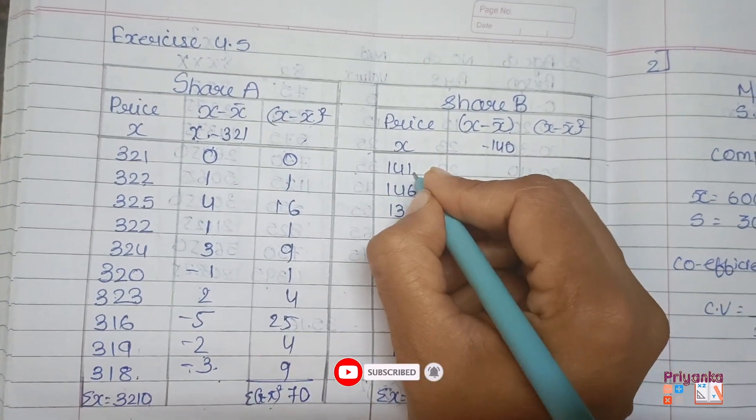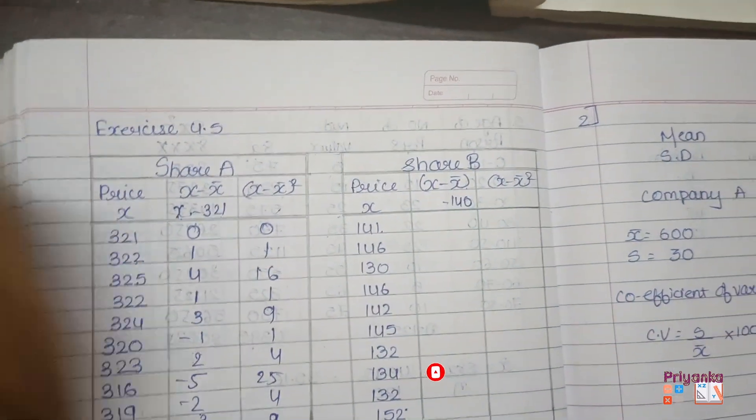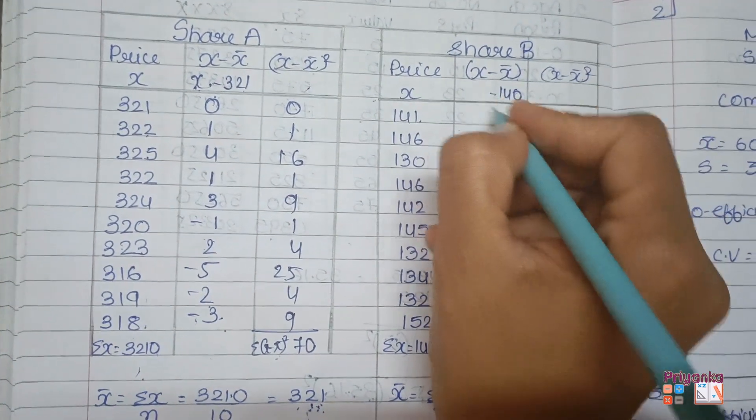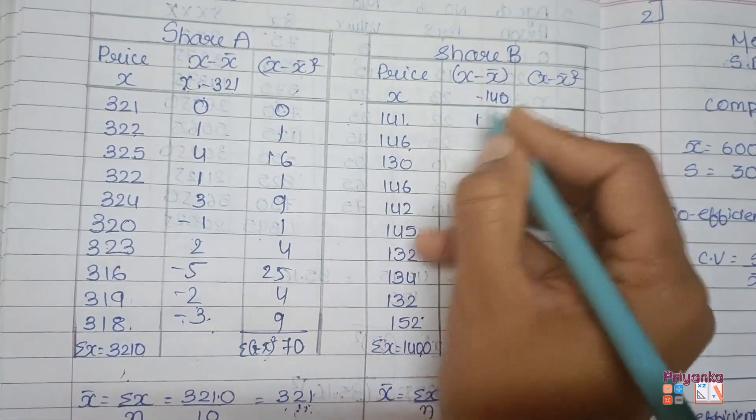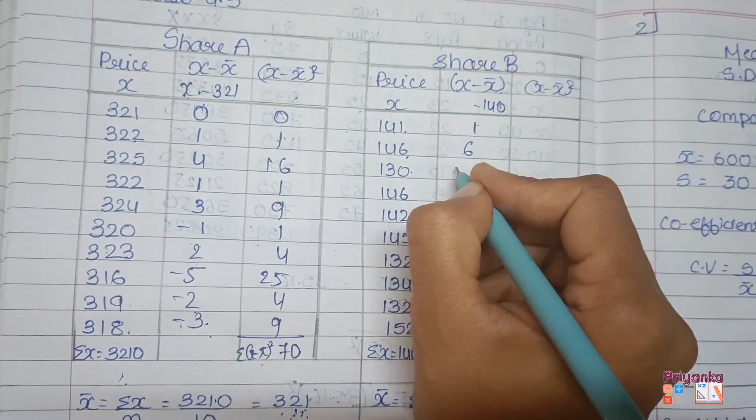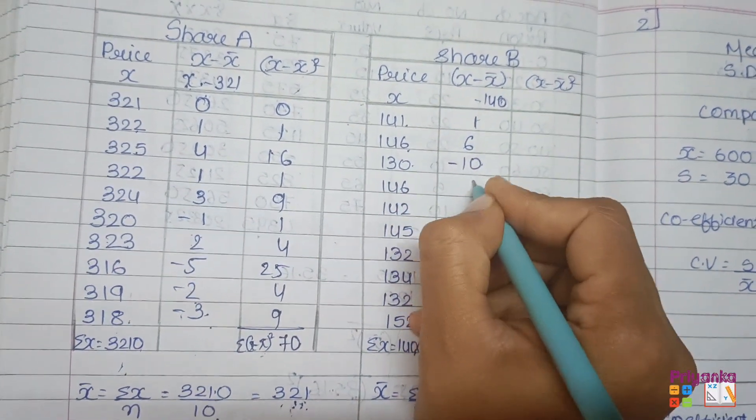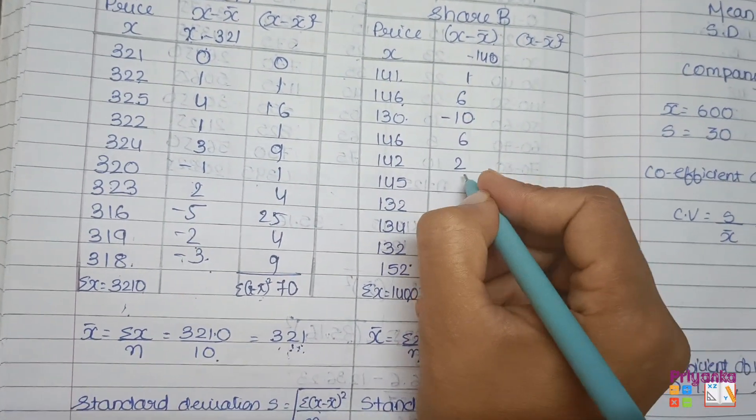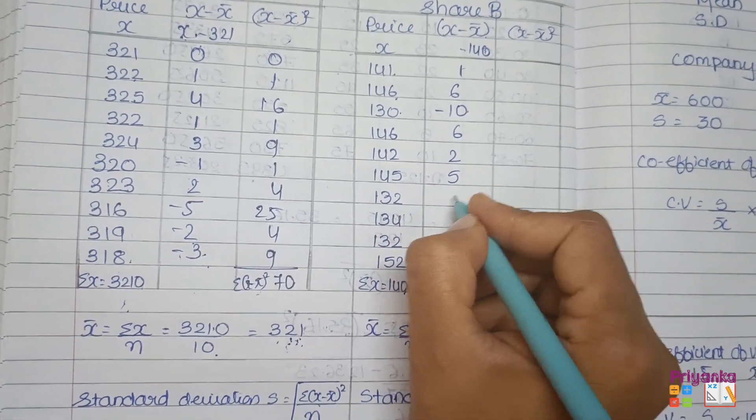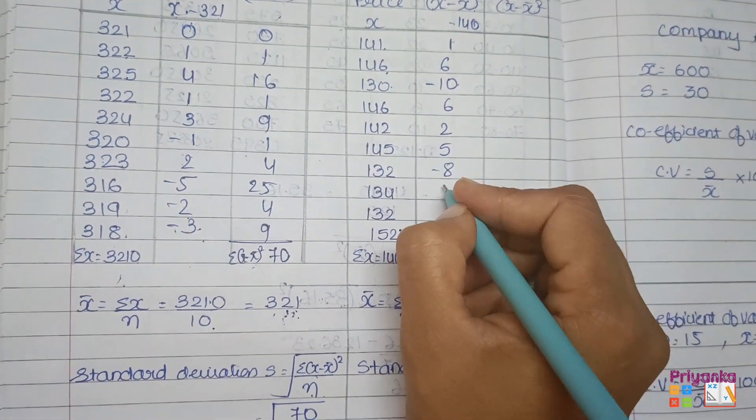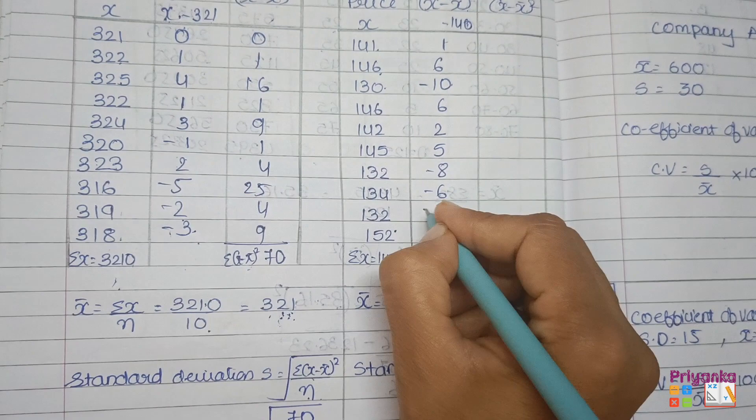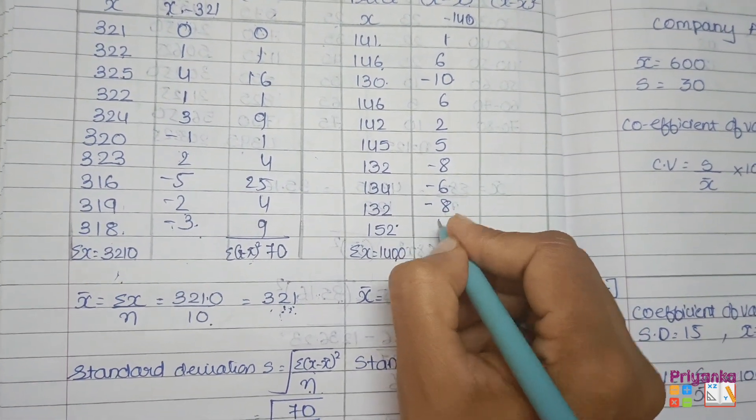So 141 minus 140, here we get the answer 1. 146 minus 140 is 6. 130 minus 140 is minus 10. Now I will continue with the remaining. Hope you now understand how you have to do the calculation of this column.